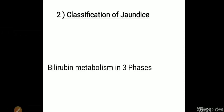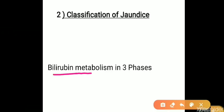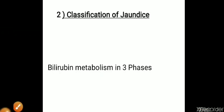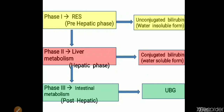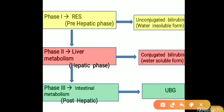The second topic is classification of jaundice. Before going to classification, you should know a few things related to bilirubin metabolism. Bilirubin is the end product of heme catabolism, which takes place in the reticuloendothelial system. Consider bilirubin metabolism in three phases: Phase 1 is bilirubin formation in the reticuloendothelial system; Phase 2 is metabolism of bilirubin in the liver; and Phase 3 is metabolism of bilirubin in the intestine.